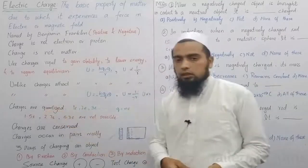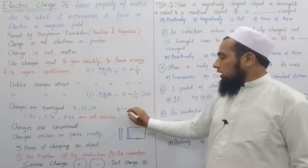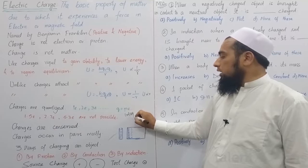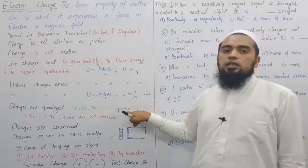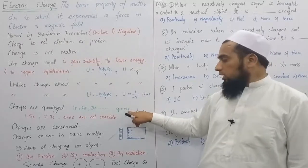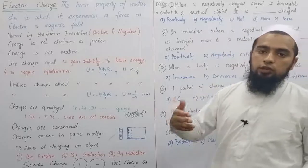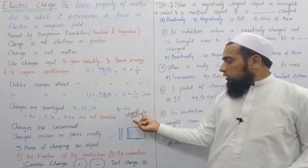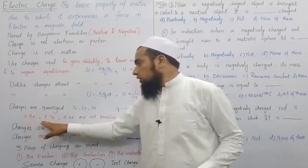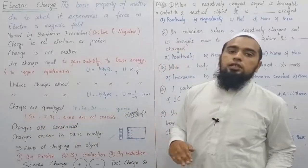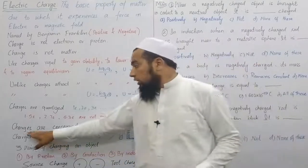Charges are quantized. You will get charges in the form of 1e, 2e, 3e, and so on. q = ne, where n is any integer. Charge is an integral multiple of e. Here e is the basic charge — 1.602 × 10⁻¹⁹ coulombs — the charge of the electron and proton, the elementary particle. So n will be an integer: ±1, ±2, ±3, 0, and so on. You will not get charge as 1.5e, 2.7e, or 5.3e — charges come in packets, each packet equal to 1e.